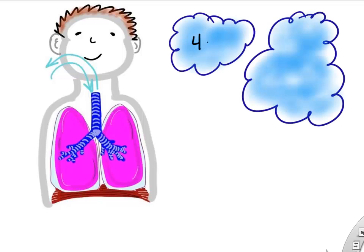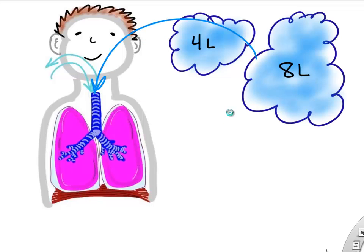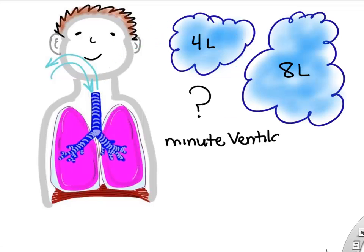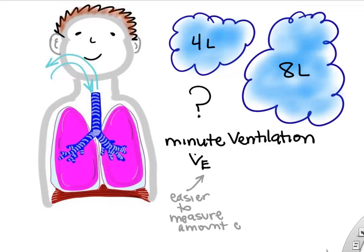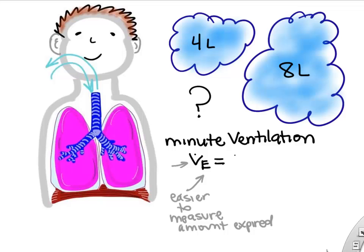Ventilation of our lung is the air we breathe in or breathe out in a minute. Sometimes you might breathe a lot of air — four liters — sometimes more or less. We call this amount of air minute ventilation, often abbreviated VE because it's easy to measure the amount of air you expire.